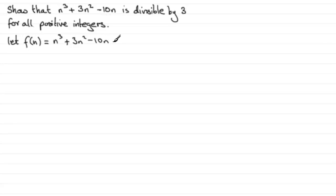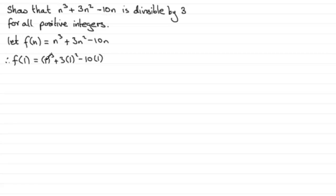We first check whether the expression is divisible by 3 when n equals 1. So f of 1 gives us 1 cubed plus 3 times 1 squared minus 10 times 1, which is 1 plus 3 equals 4, take away 10, giving minus 6. So we can see it is divisible by 3 — therefore true for n equals 1.